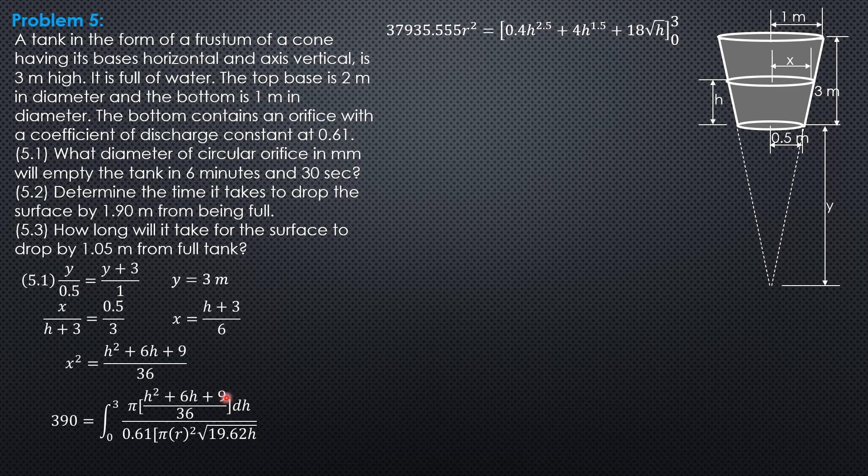Substitute values equals 0.4 times 3 to the 2.5 plus 4 times 3 to the 1.5 plus 18 square root of 3 minus lower limit 0. Then we can now solve for R: 0.03917 meter or 39.17 mm, then times 2: 78.34. So that's the diameter of the orifice, 78.34 mm.